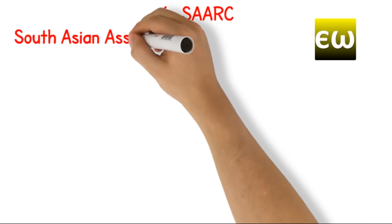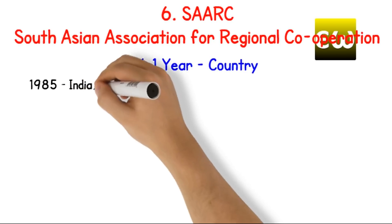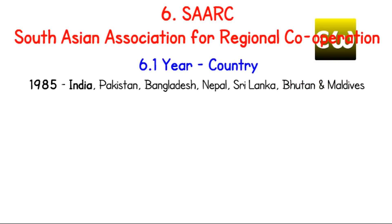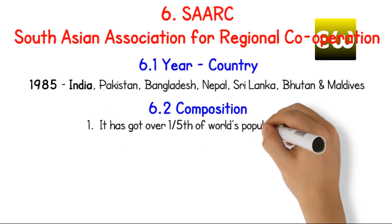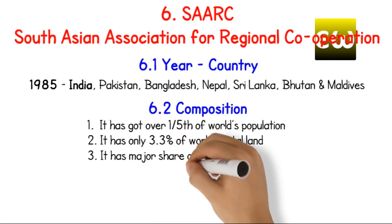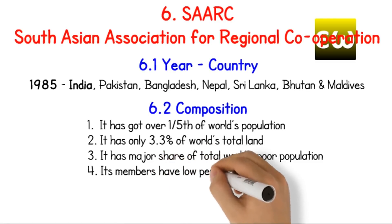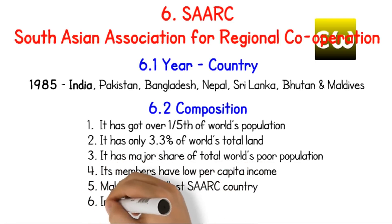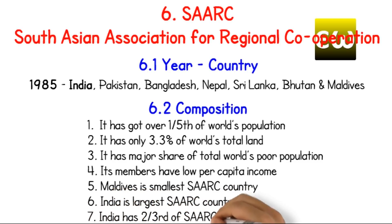South Asian Association for Regional Cooperation. Year and country: 1985, India, Pakistan, Bangladesh, Nepal, Sri Lanka, Bhutan and Maldives. Composition: 1. It has got over one-fifth of world's population. 2. It has only 3.3% of world's total land. 3. It has major share of total world's poor population. 4. Its members have low per capita income. 5. Maldives is smallest SAARC country. 6. India is largest SAARC country. 7. India has 2.3% of SAARC population.